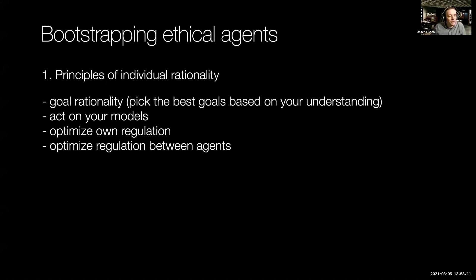These principles of individual rationality basically apply to all rational agents that develop a degree of sentience. It doesn't matter which kind of religion you have or what kind of outlook on life you have. This is something that everybody is able to deduce: that you should have goal rationality, willingness to act on your models, optimize your own regulation, and optimize the regulation between agents. And now the question is, how can we get from this individual rationality to some kind of next-level rationality and next-level agency?